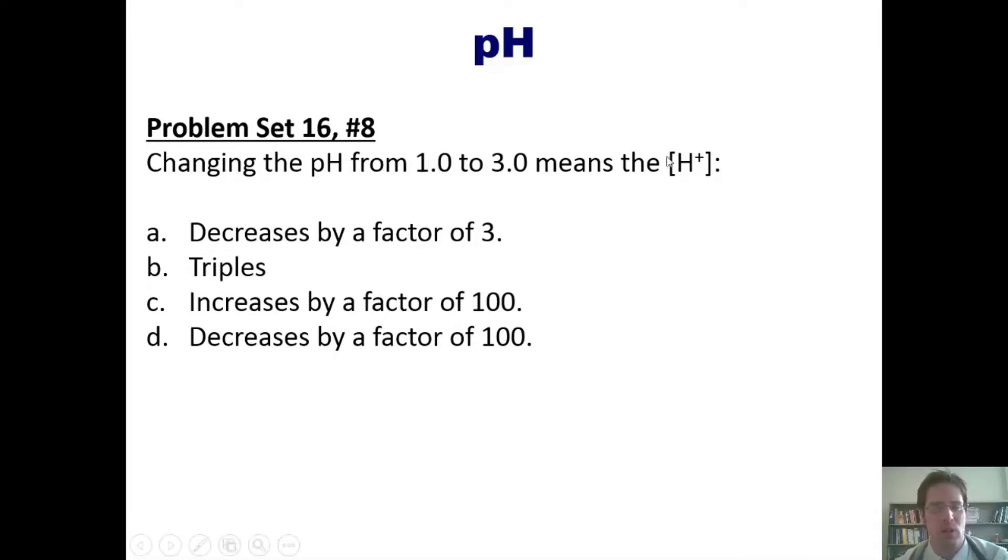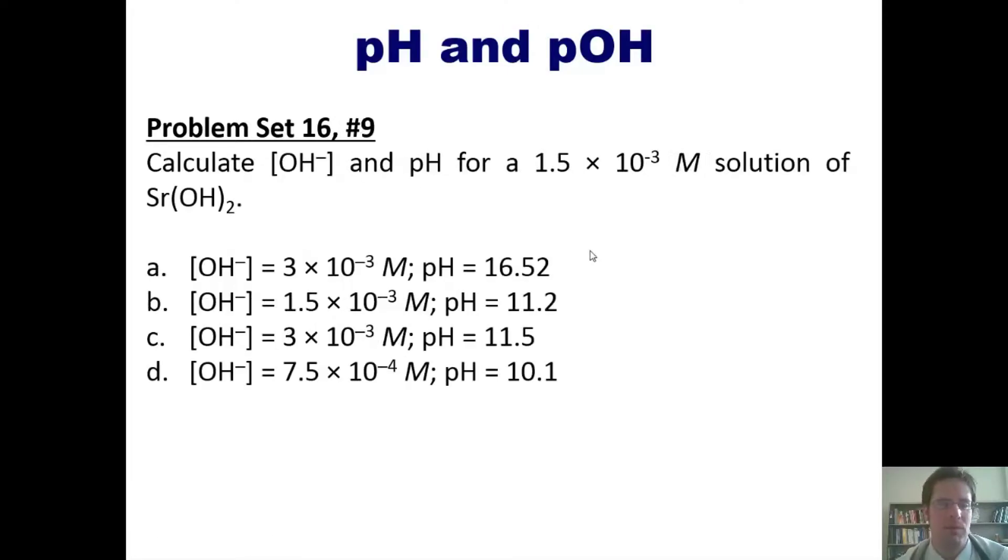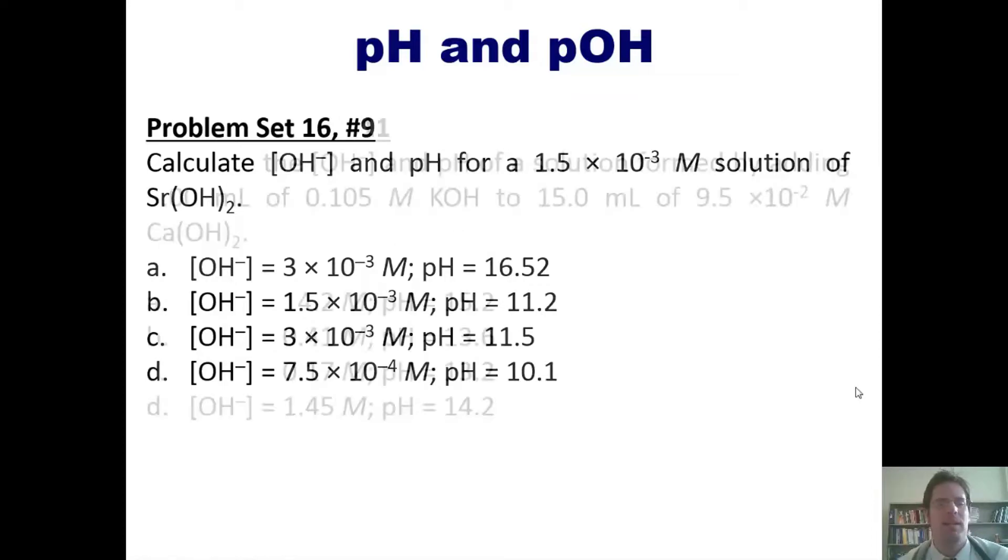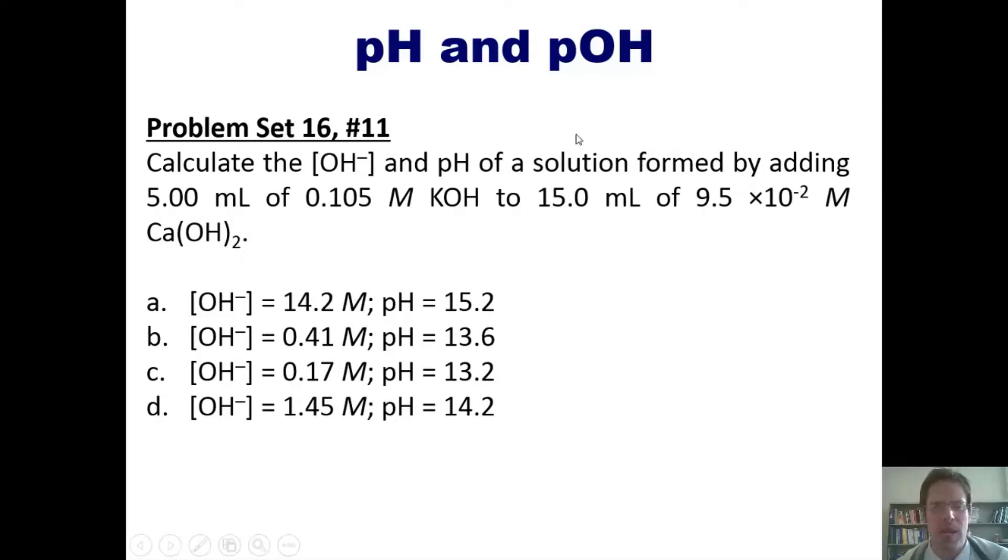And now this problem: changing the pH from 1 to 3 means that the proton concentration or hydronium ion concentration does what? Now this problem: calculate the hydroxide concentration and pH for 1.5 times 10 to the negative third molar solution of strontium hydroxide. Once again, you're welcome to attempt this on your own, and then if you like, you can click the link here to a separate video in which I will show you how to do it on the board.